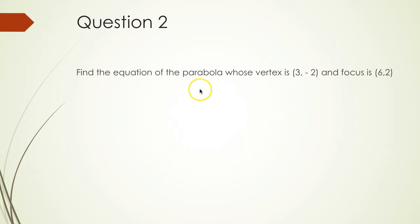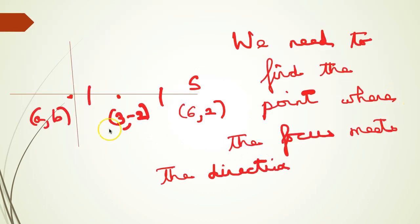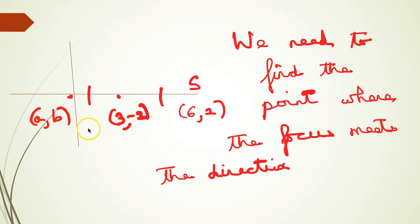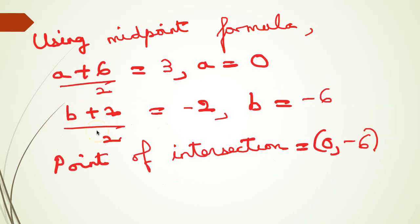Question 2: Find the equation of the parabola whose vertex is at (3, -2) and focus is (6, 2). The vertex is (3, -2) and the focus is (6, 2). We first find the point where the axis meets the directrix. Using the midpoint formula, if the intersection point is (a, b): (a + 6)/2 = 3 and (b + 2)/2 = -2, giving a = 0 and b = -6. So the point of intersection is (0, -6).